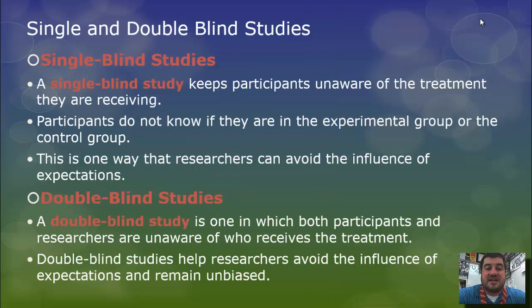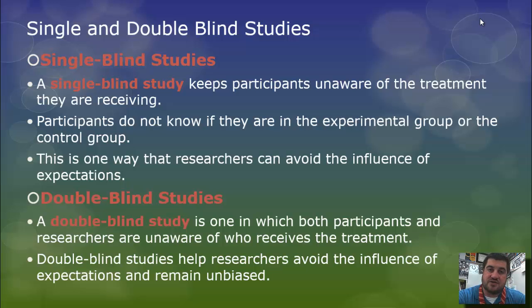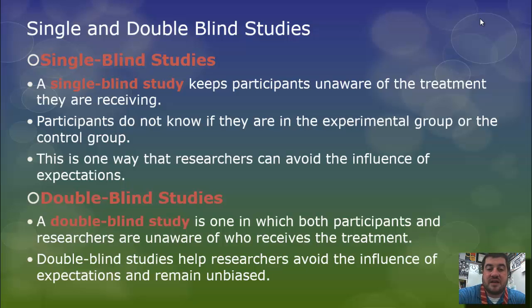Single blind and double blind studies help avoid bias. A single blind study is one where the participants are unaware of the treatment they are receiving — whether it's a placebo or the real treatment itself. They don't know what group they're in, whether it's the control group or the experimental group. Basically, in every study, participants should be unaware of the treatment they are receiving. It's one way that researchers can avoid expectations.